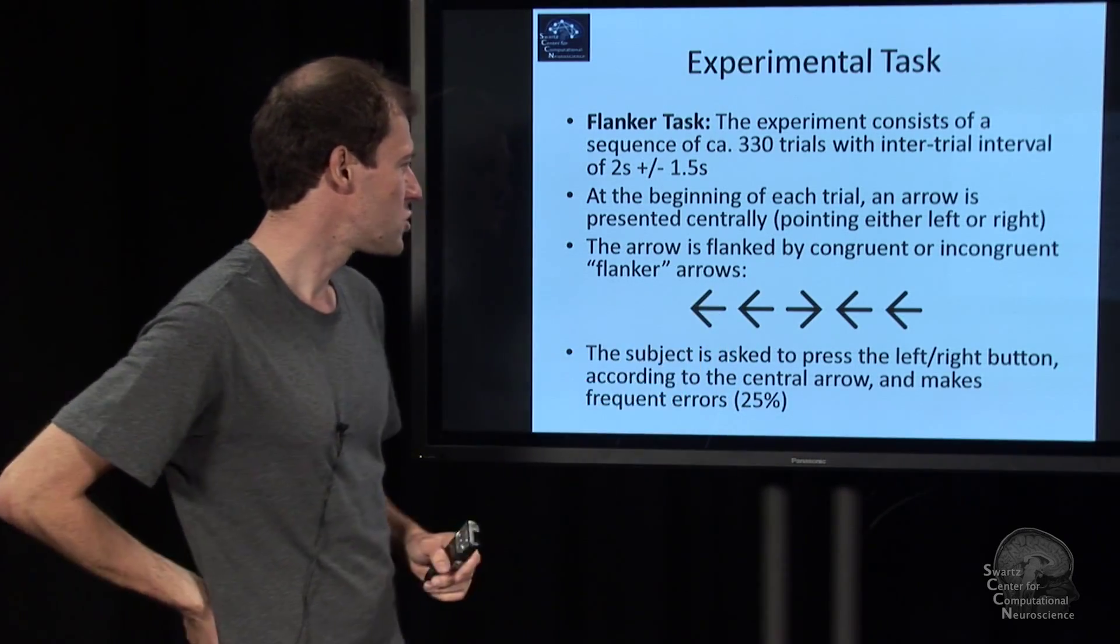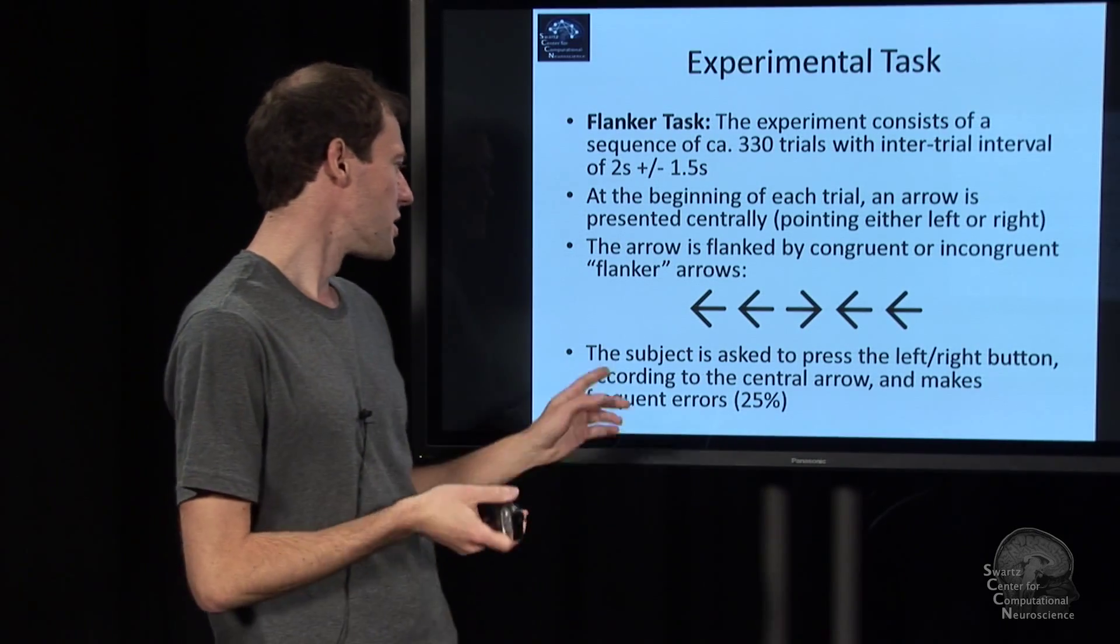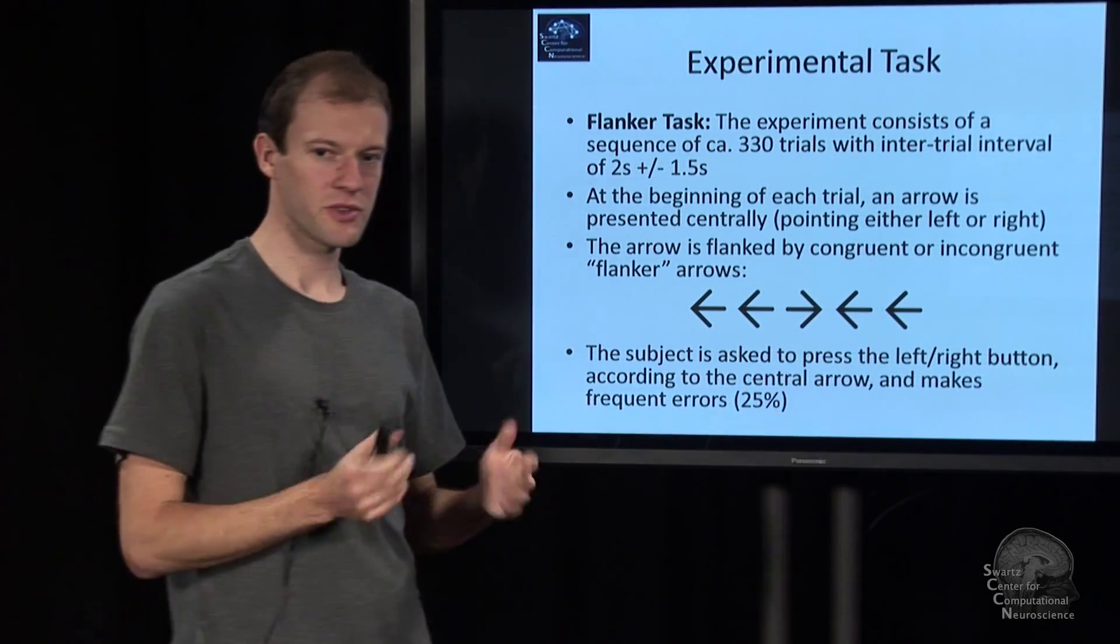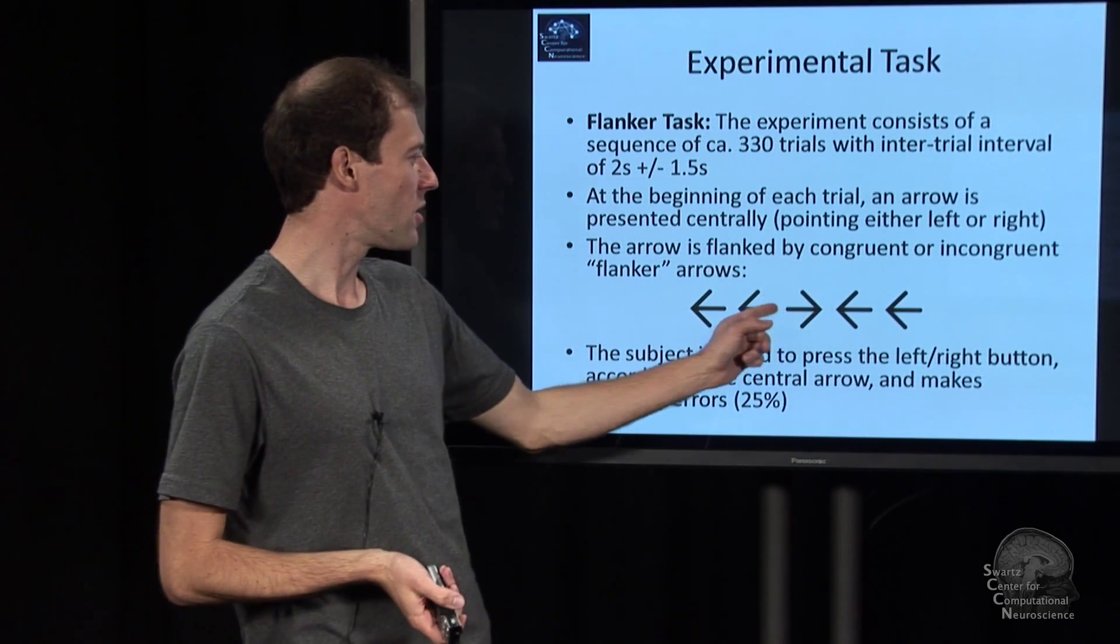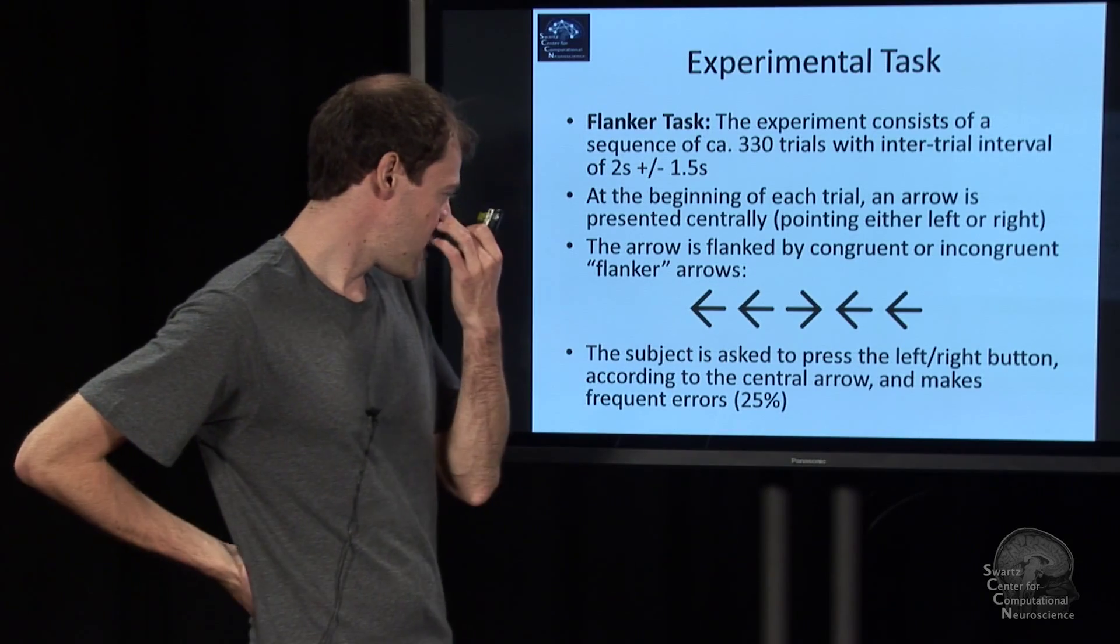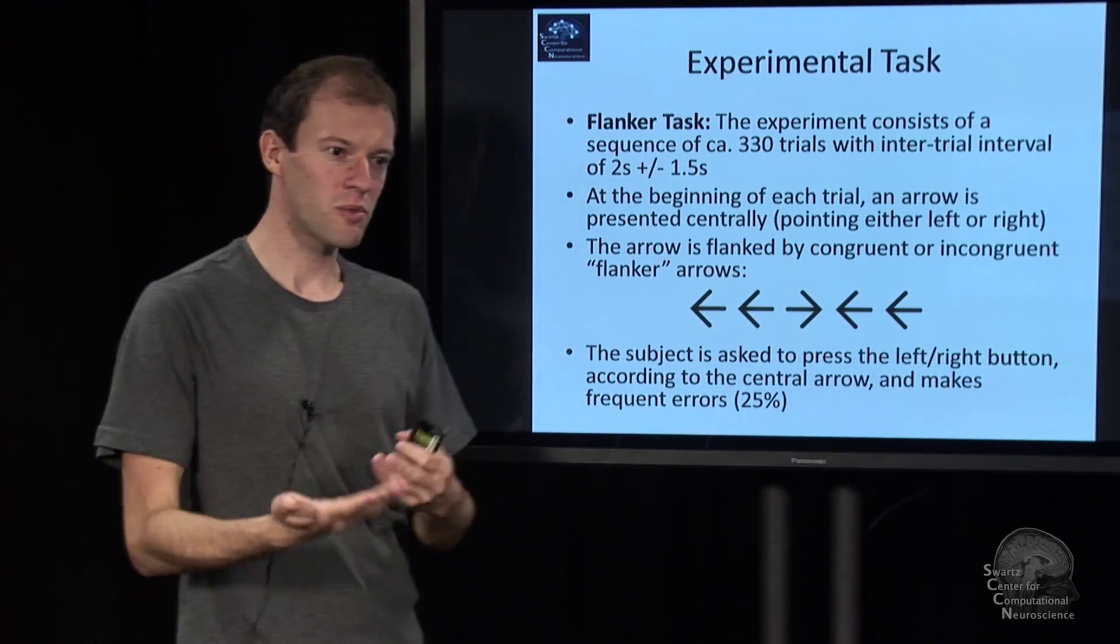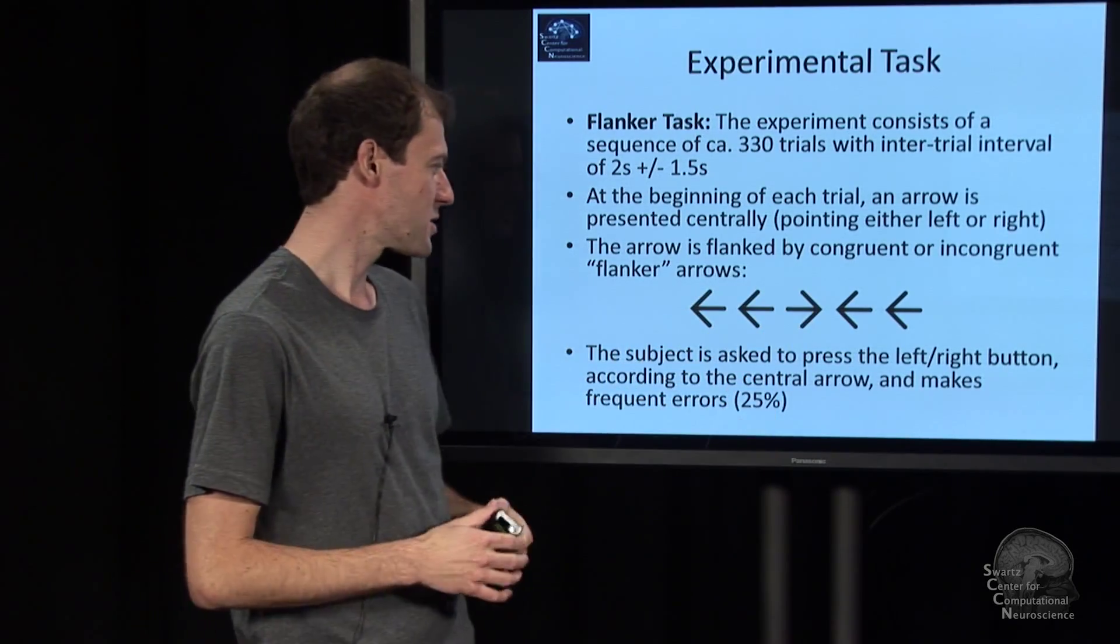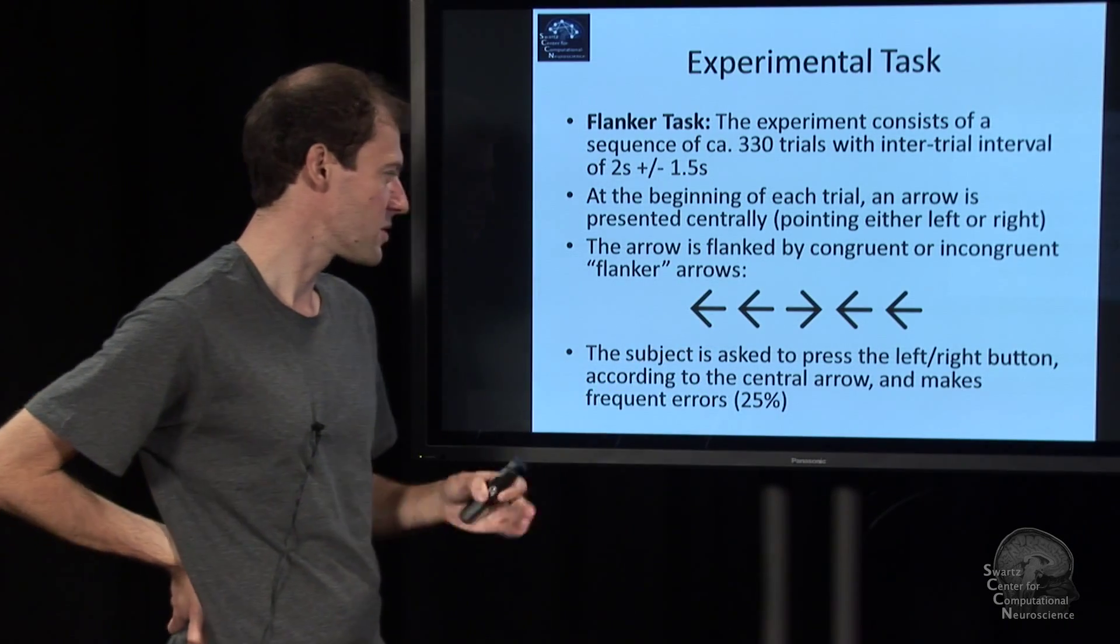The purpose of these things is as follows: the subject is supposed to press either left or right button depending on the direction of the central arrow, and do it as fast as possible. And the flankers tend to prime the person to, in some cases, make errors and press basically the wrong button.